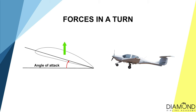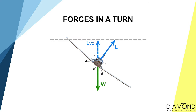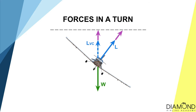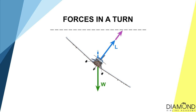Ideally, we apply just enough back pressure so the vertical lift equals the weight, and we maintain a level turn. If we split the lift force into its horizontal component, it is called the centripetal force — the force that pulls the aircraft into the direction of the turn. This is the main force that enables the aircraft to turn.